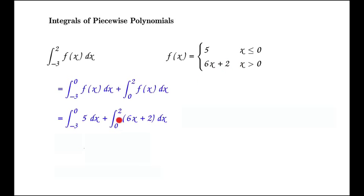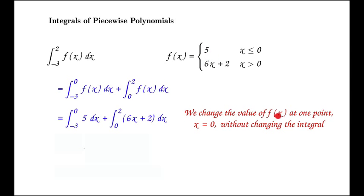You might ask about x equals 0, because at x equals 0, the value of the function is 5. But remember, we saw that if we change the value of f of x at one point, in this case x equals 0, we're not changing the integral. So we actually changed the value of this function at x equals 0 from 5 to 6 times 0 plus 2 when we wrote down this integral, but we haven't changed the value of the integral because we can change the value at one point without changing the integral.